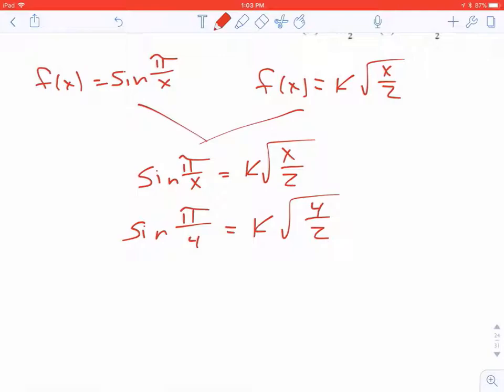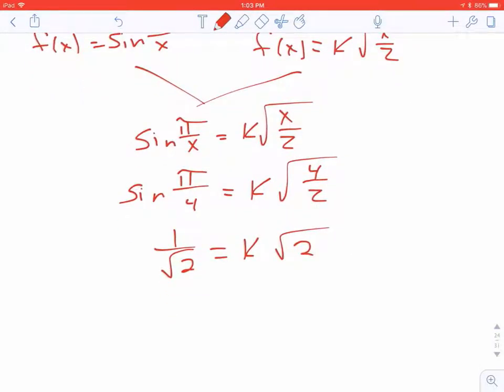And then we just simply solve the equation for k. Sine of pi over 4 is 1 over the square root of 2, or if you prefer, square root of 2 over 2. The AP test doesn't care what format it's in. 4 divided by 2 is 2. To get k by itself, we could multiply both sides by 1 over the square root of 2.